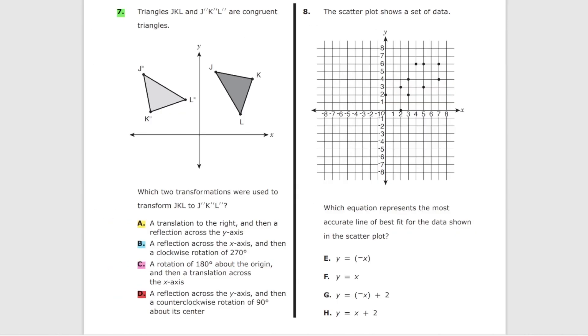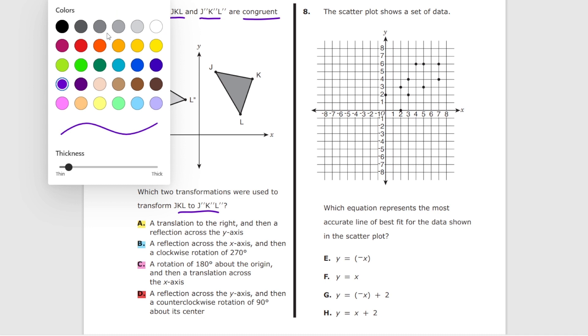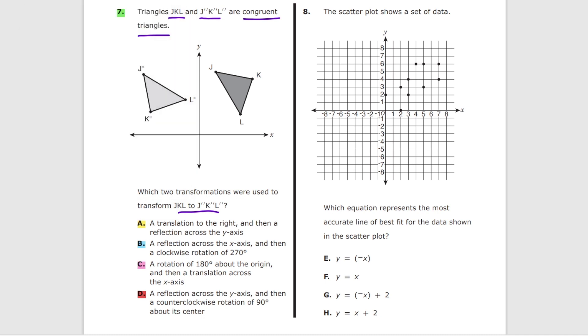Problem number 7, perhaps the most difficult problem on this test. Triangles JKL and J' K' L' are congruent triangles meaning they're equal to one another. Which two transformations were used to transform JKL to J' K' L'? So let's go through multiple choice options one by one.